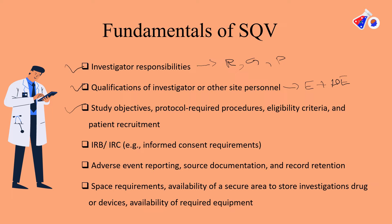During the SQV, the study objectives, protocol-related procedures, eligibility criteria, and patient recruitment potential are checked. For example, to enroll 100 subjects, you may need to identify 300, accounting for screen failures and early terminations. The patient pool is estimated during the SQV. Availability of the IRB or IEC and the informed consent requirements of the sponsor are also checked.